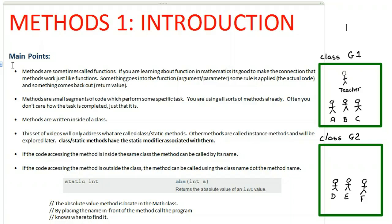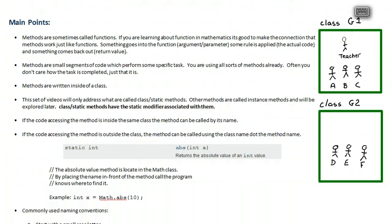Methods are essentially small segments of code which perform some specific tasks. You're already using them in a lot of your programming. Often you don't care how the task completed, just that it is. Methods are written inside of a class and we'll see an example down below. The next thing to know is that in this set of videos we're looking at what are called class or static methods. There are some other methods called instance methods which will be explored later but we're interested specifically in what are called class or static methods and they always have the static modifier in their header.